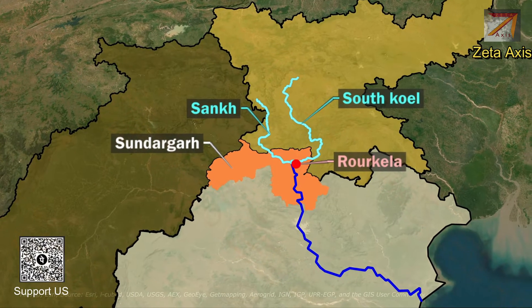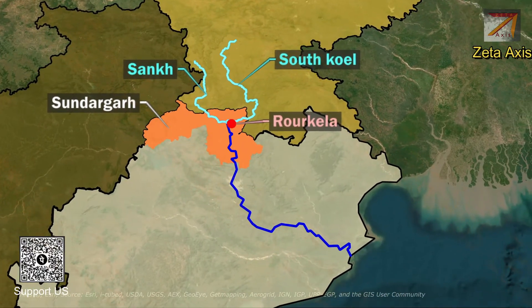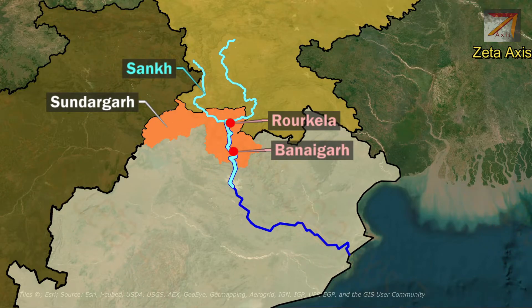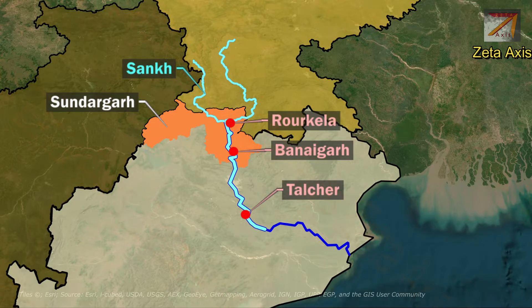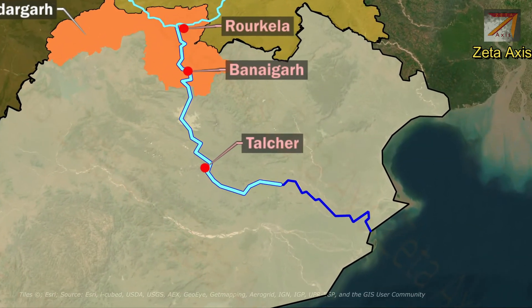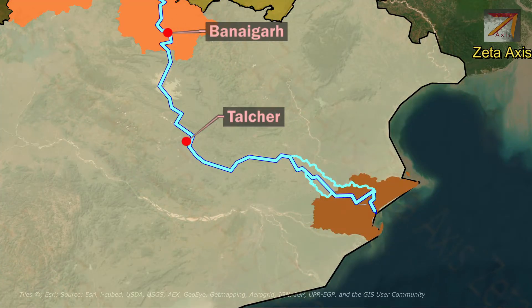After the confluence of South Koyal and Sankh rivers, they flow together as the Brahmani river. The Brahmani river flows to Bonaigarh in Sundargarh district and then flows through Talcher, which is an important coal mine area. The Brahmani river divides into several channels before flowing into the Bay of Bengal in Kendrapara district of Odisha.